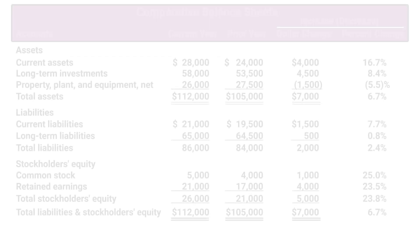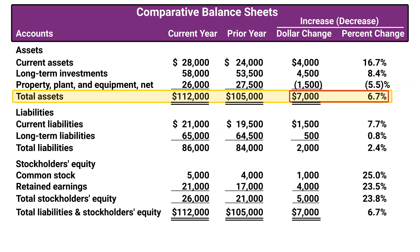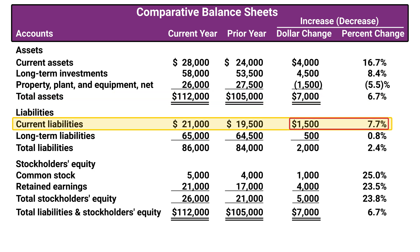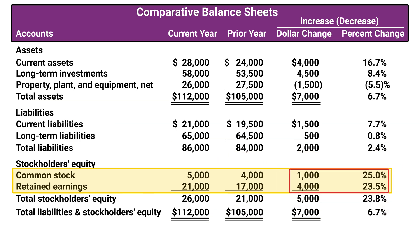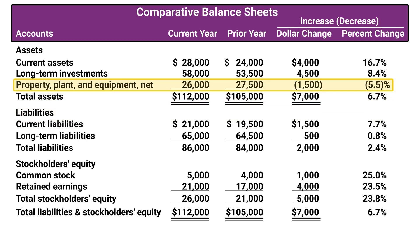We can also apply horizontal analysis to the balance sheet. We see an increase of $7,000 or 6.7% in total assets, but only a $2,000 or 2.4% increase in total liabilities. We also see that most of the growth in assets is from the sale of common stock for $1,000, and from the increase in retained earnings of $4,000. The $4,000 or 23.5% increase in retained earnings shows that of the $12,500 of net income, the company pays out $8,500 in dividends and reinvests the remaining $4,000 into the business. Property, plant and equipment net, which we also refer to as plant assets, decreased by 5.5%, which is at least partly due to depreciation.